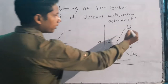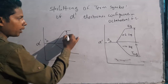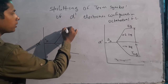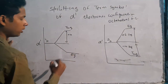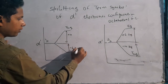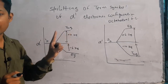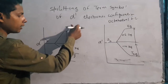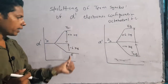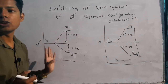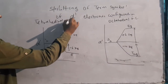Tetrahedral field strength में energy कुछ इस तरह होगी: t2 ऊपर आ जाएगा और e नीचे आ जाएगा। t2 की energy +4dq में बढ़ेगी और e की energy -6dq में घटेगी। यहाँ ध्यान देना है कि t2g लिखा है लेकिन tetrahedral में g नहीं आता। Octahedral में t2g और eg होते हैं, tetrahedral में t2 और e होते हैं क्योंकि tetrahedral में symmetry का वो concept नहीं रहता।